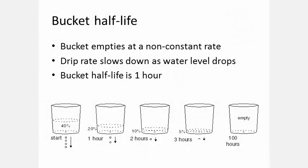The bucket empties at a non-constant rate. If you fill the bucket to the 40 percent level, it starts leaking at a rate of four drops per second. An hour later, it has dropped to the 20 percent level, but now it's leaking only half as fast, two drops per second. After another hour, it falls to the 10 percent level, and now it's leaking at just one drop per second, and so on.